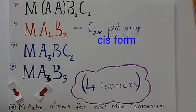Complexes with MAA3B3 show fac and mer isomerism.